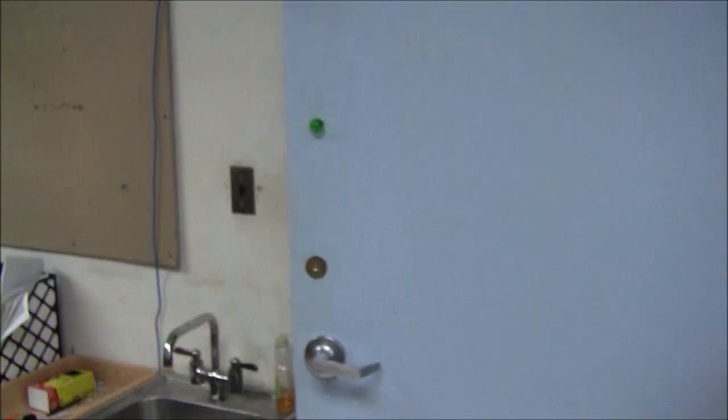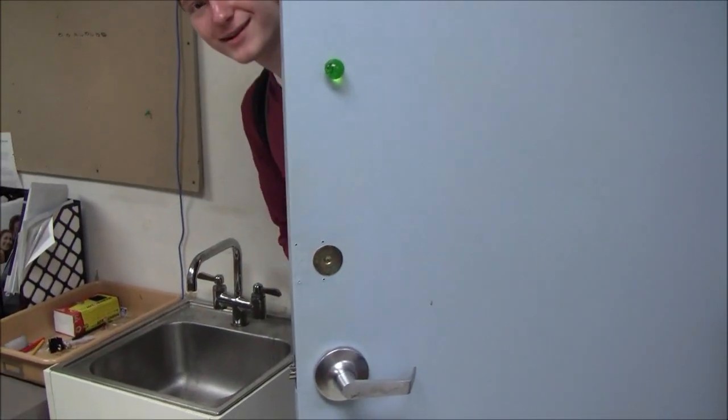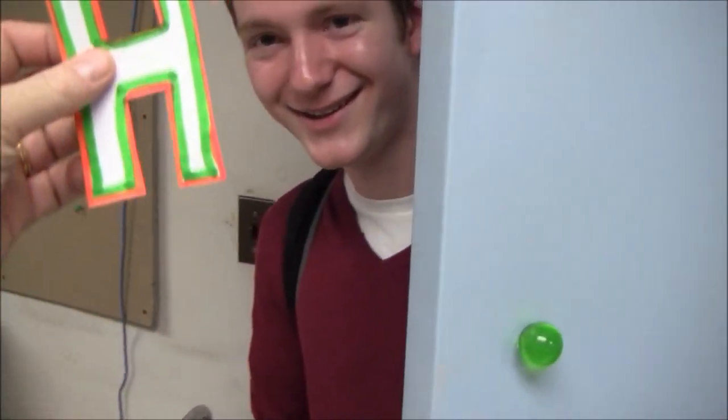All right, I'm a Bronsted-Lowry acid, and you, my friend, are a Bronsted-Lowry base. Boom! You're a conjugate acid now. What do you think of that? Do you want to be a Bronsted-Lowry base? Don't move. You are now a conjugate acid, sir. Thank you.